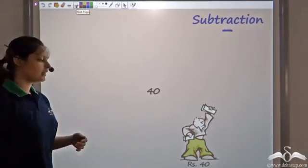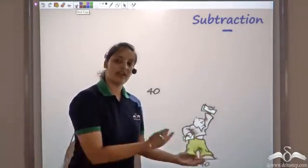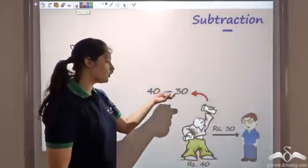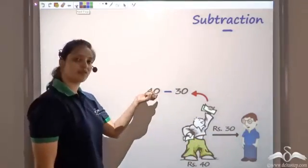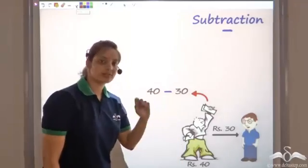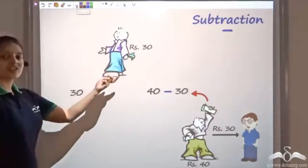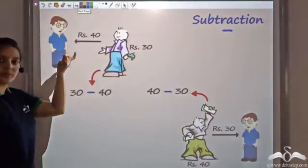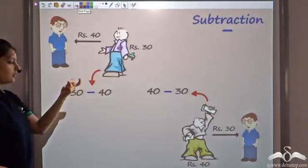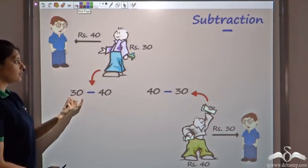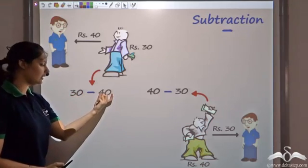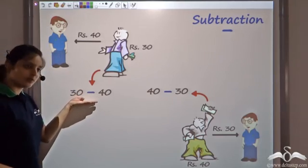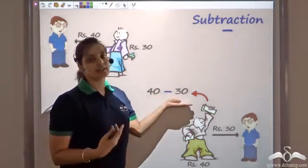Now what about subtraction? Say you had 40 rupees and your friend is in need and asks you for 30 rupees. If you give your friend 30 rupees, you would be left with 40 minus 30, that is 10 rupees. What if you had just 30 and your friend asked for 40 rupees? Even if you give him your 30 rupees, you would have to give him 10 more — you actually owe him 10 more rupees.